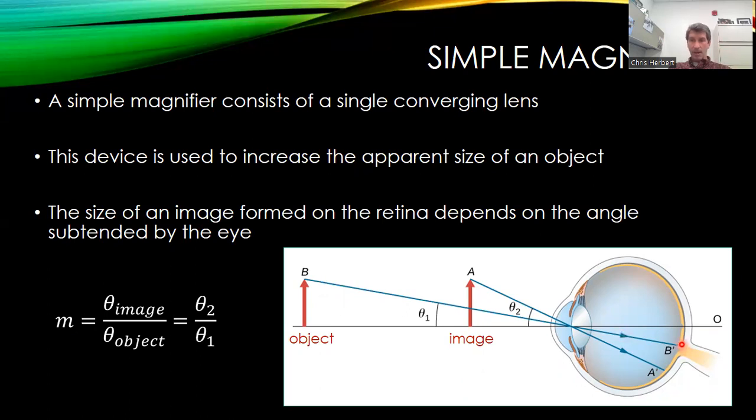So you can see here that the image created by the eye from just the object alone would be smaller on the retina than the image created by the virtual image created by the magnifying glass. Now we define the amount of magnification as being the angle that the image subtends compared to the angle that the object would subtend for that same configuration.